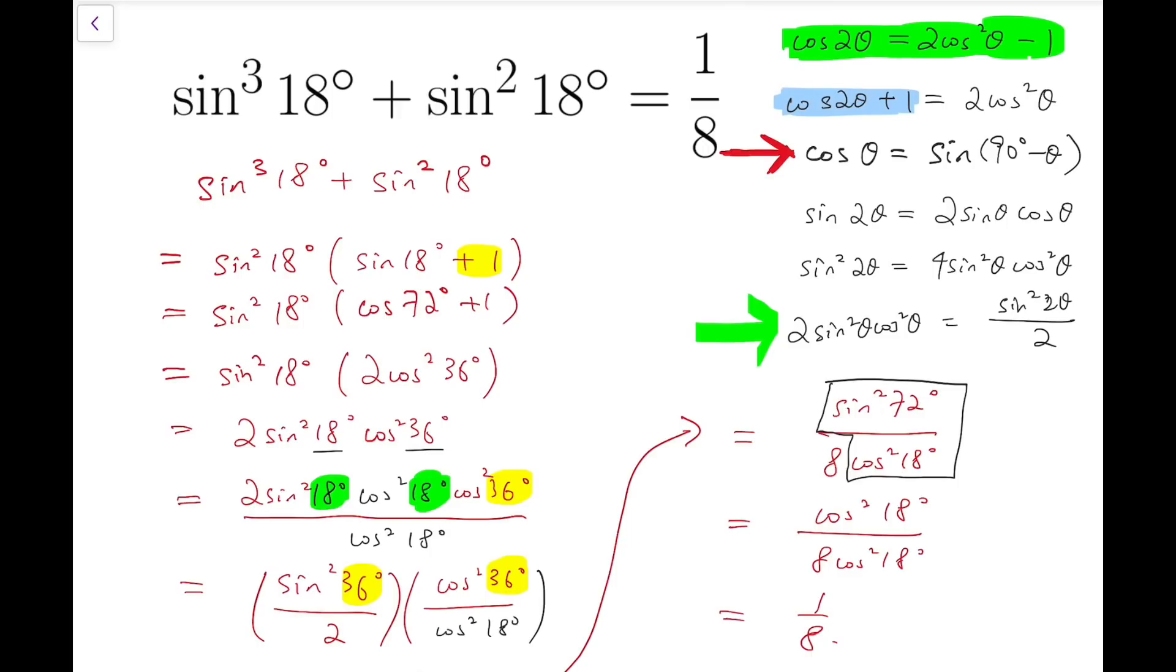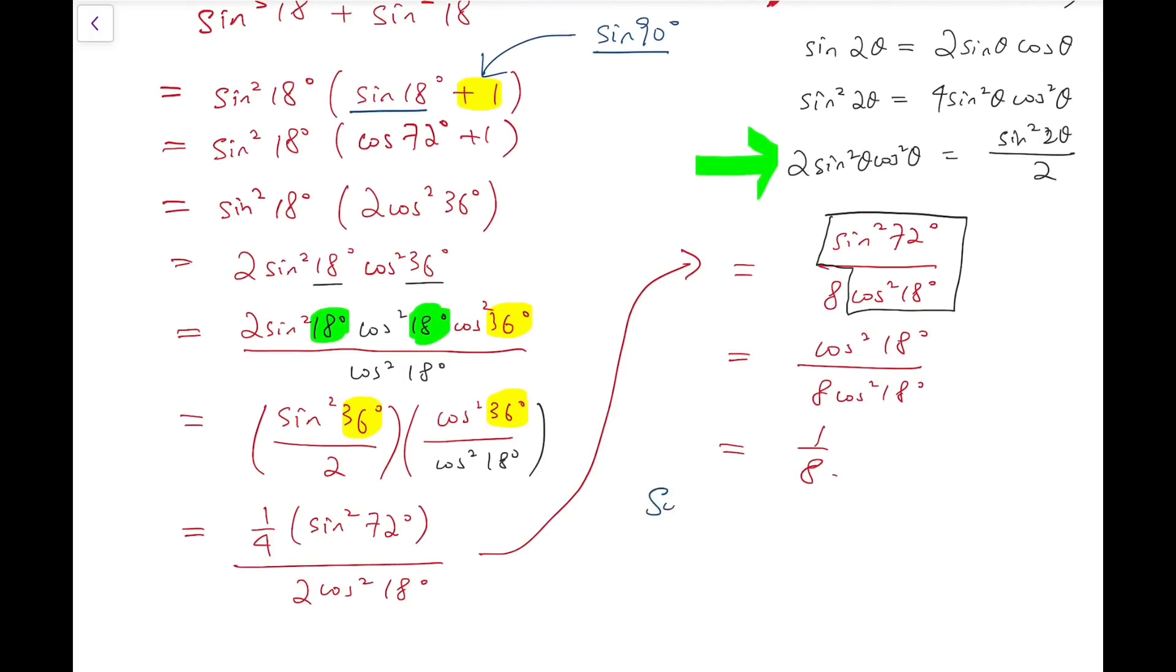Now just a quick remark before I move on to the second method. For this plus 1 labeled in yellow for the second step, I can actually replace that by sine of 90 degrees. And then we have two sines adding together. So at this point you can also try to use the sum to product formula, which says that sine a plus sine b in general is equal to 2 sine (a+b)/2 cos (a-b)/2.